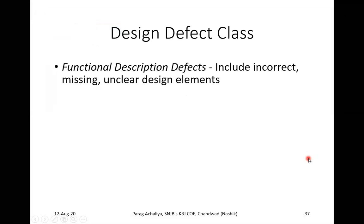Another type is functional description defect (at design level), which includes incorrect, missing, or unclear design elements. Incorrect means: if you click Save, the data should save — but if clicking Save clears all your data, that is an incorrect function. Missing means a required option like Save is absent. Unclear means a button is present but its purpose is unknown. These are the types of unclear design elements.